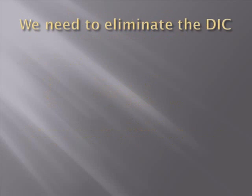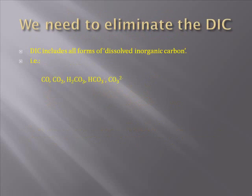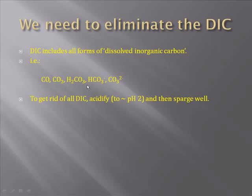We talked about how the particulate carbon is removed by passing the solution through a filter. Now we need to get rid of the dissolved inorganic carbon. There are multiple forms of dissolved inorganic carbon: dissolved carbon monoxide or dissolved carbon dioxide, and forms of carbonate, which are formed in aqueous solutions when carbon dioxide is dissolved there. To get rid of all dissolved inorganic carbon, the first thing you do is acidify the solution.